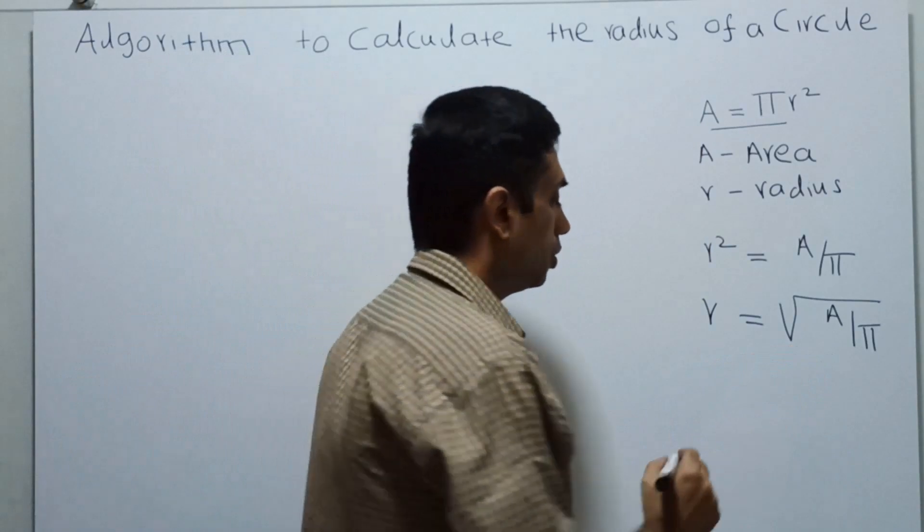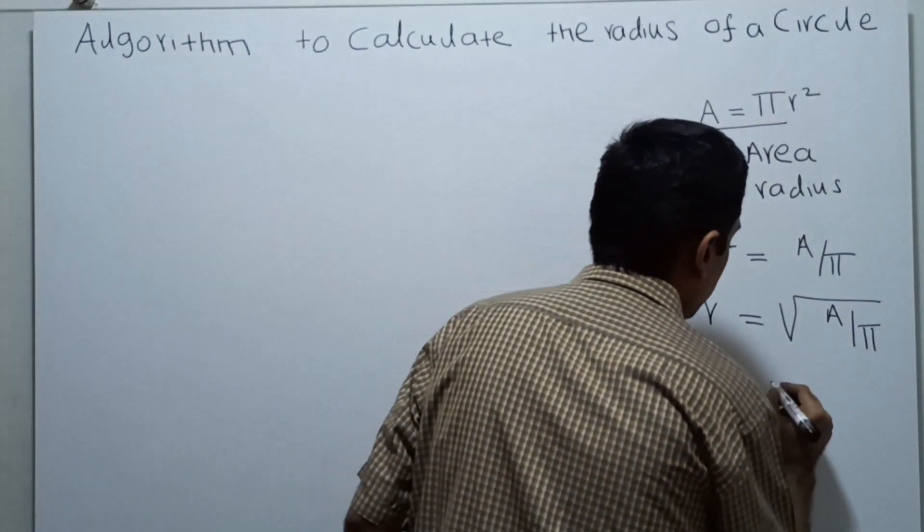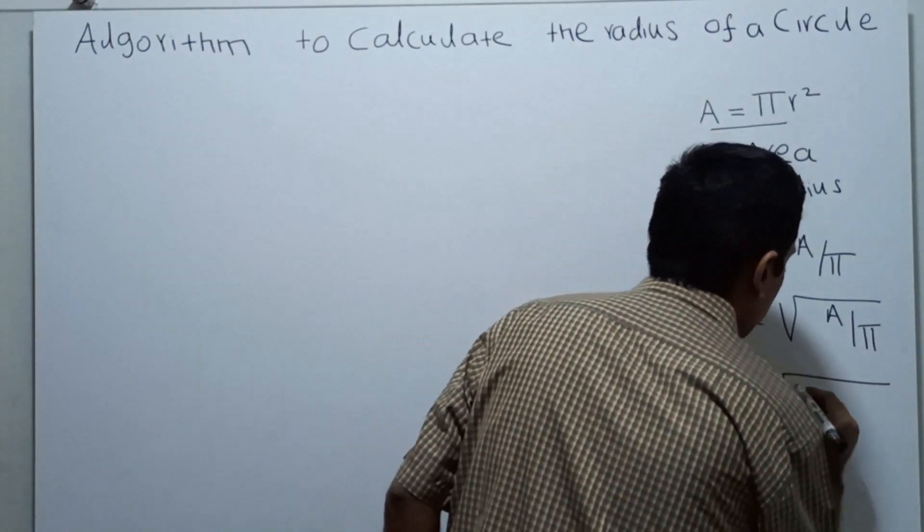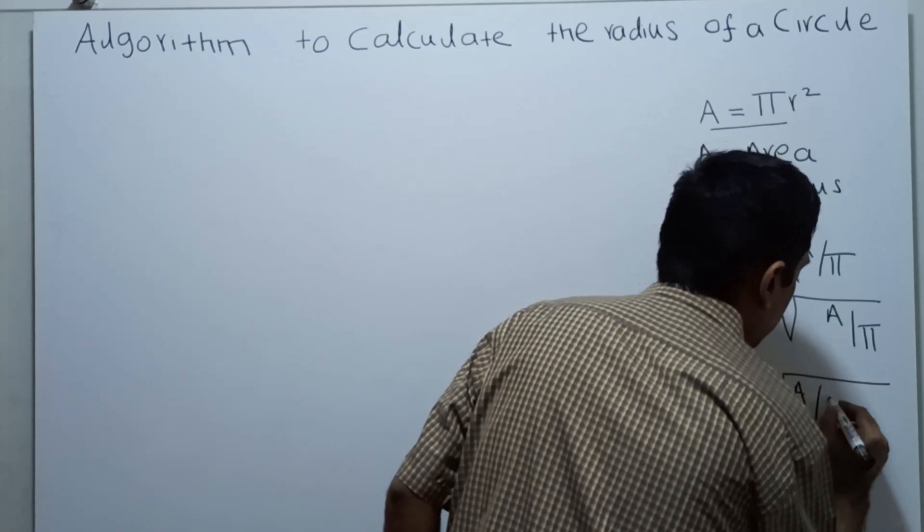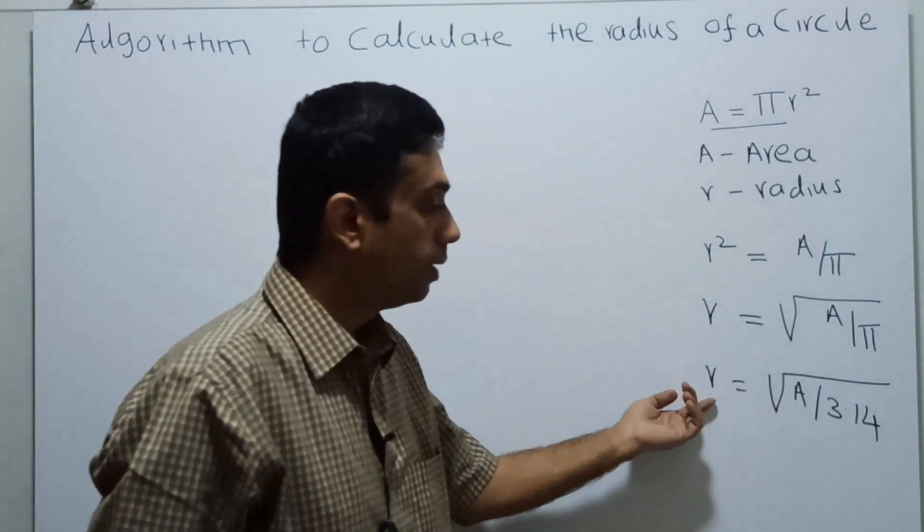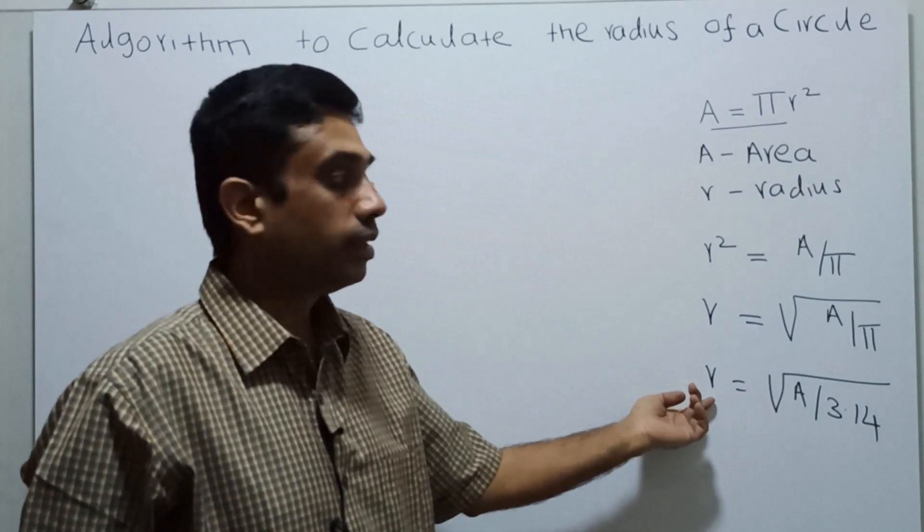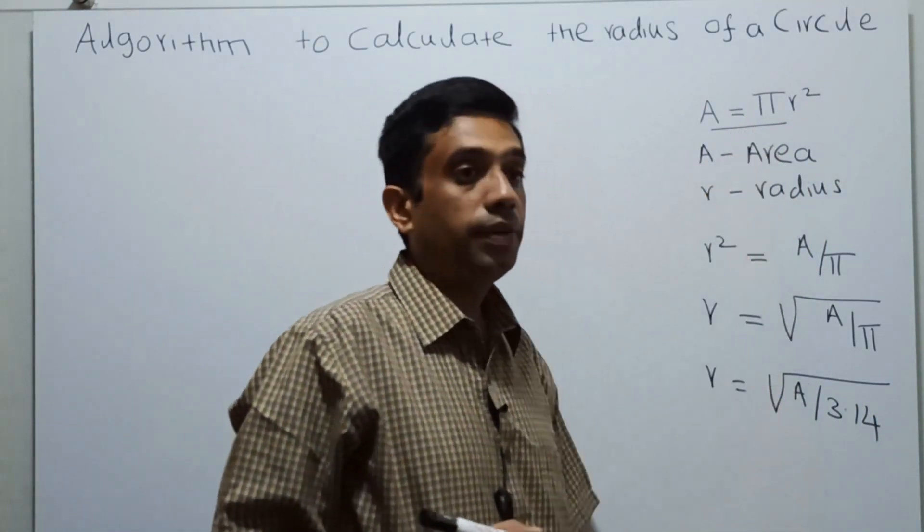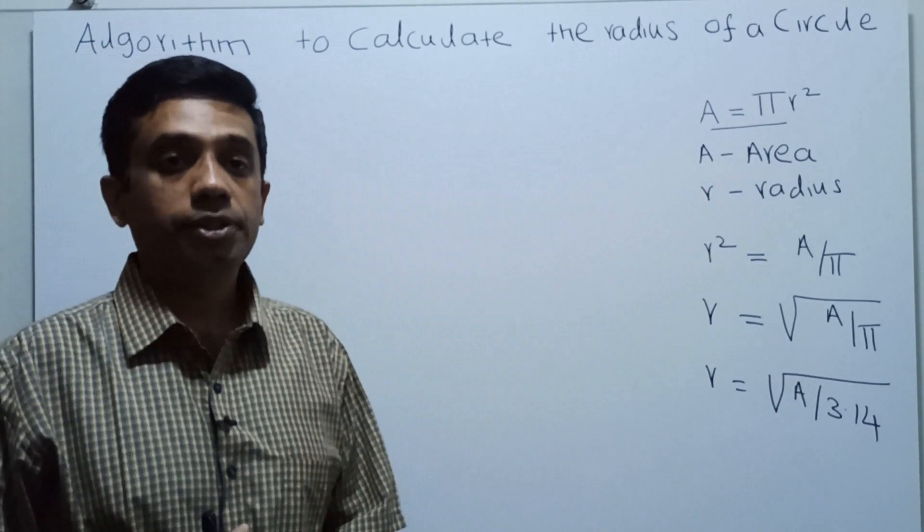So what is the value of pi? This is equal to 3.14. By using this method, we can say that r equal to square root of area divided by 3.14, which gives the radius of the circle. So based on this formula, we are going to write an algorithm to calculate the radius of the circle by obtaining area as an input.